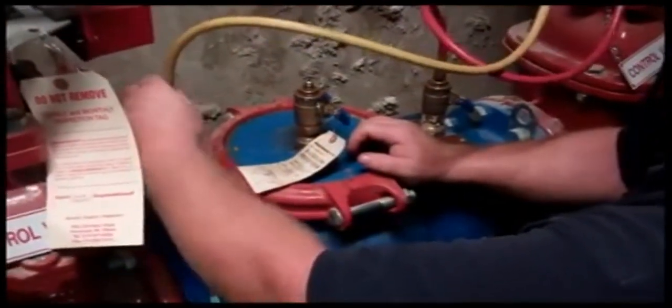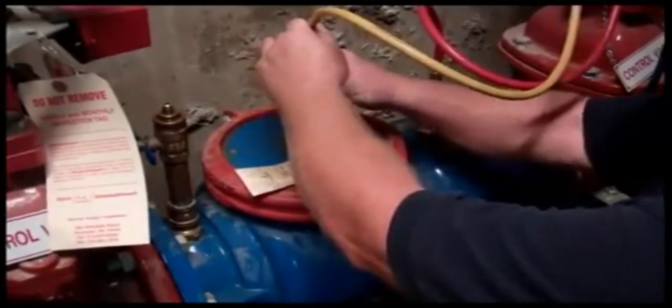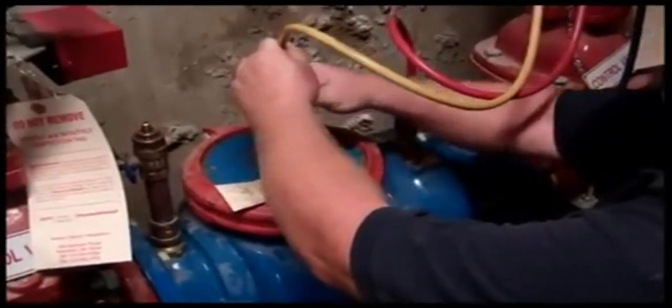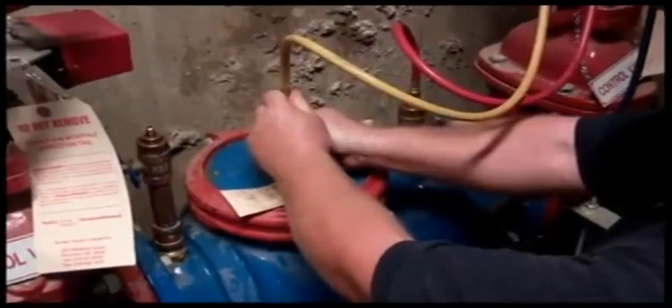The technician then adjusts the hoses and moves them so that they are on the front and the back side of the second check on the backflow device. The same steps are then repeated.